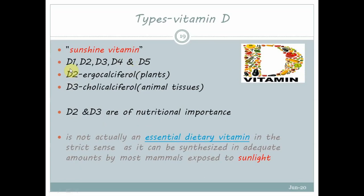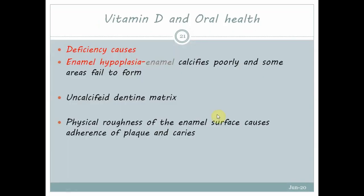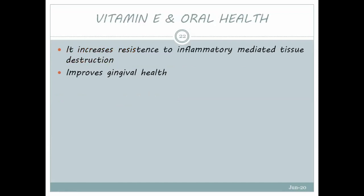Vitamin D — the sunshine vitamin — has categories D1 to D5, with D2 and D3 being of nutritional importance. Only fat-soluble vitamins have an upper intake level because they are stored in the body, unlike water-soluble B and C vitamins. Vitamin D deficiency causes enamel hypoplasia, uncalcified dentine matrix and physical roughness of enamel surfaces, which promotes plaque adherence and caries.